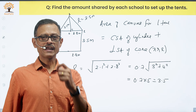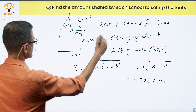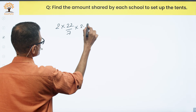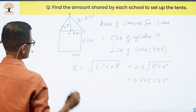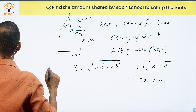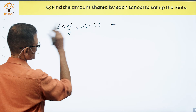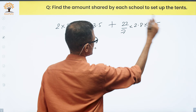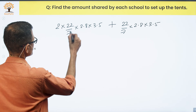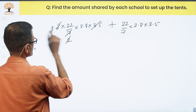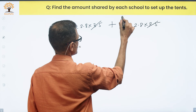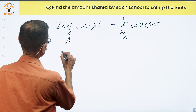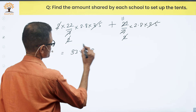We have all the data, so let's find the canvas area for one tent. CSA of cylinder = 2 × (22/7) × 2.8 × 3.5. Lateral SA of cone = (22/7) × 2.8 × 3.5. After cancellations, the cylinder term gives 22 × 2.8 and the cone term gives 11 × 2.8, which together equal 33 × 2.8. That is the area of canvas for one tent.